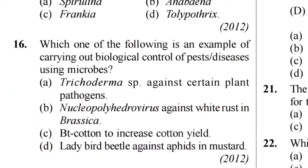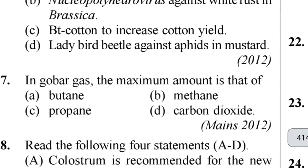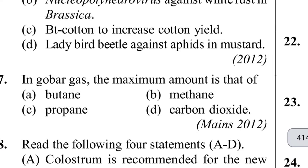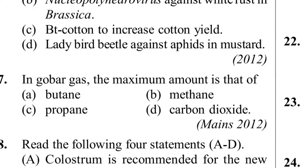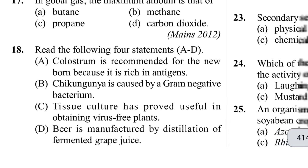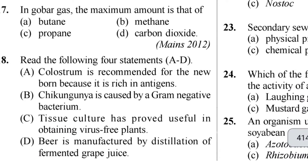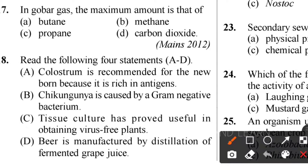Seventeenth question: in gobar gas, the maximum amount is that of what? Gobar gas is produced from cow dung and is also called natural gas. It contains the maximum amount of methane because of the presence of methanogens inside the gut of ruminant animals, which gives dung with more methane.